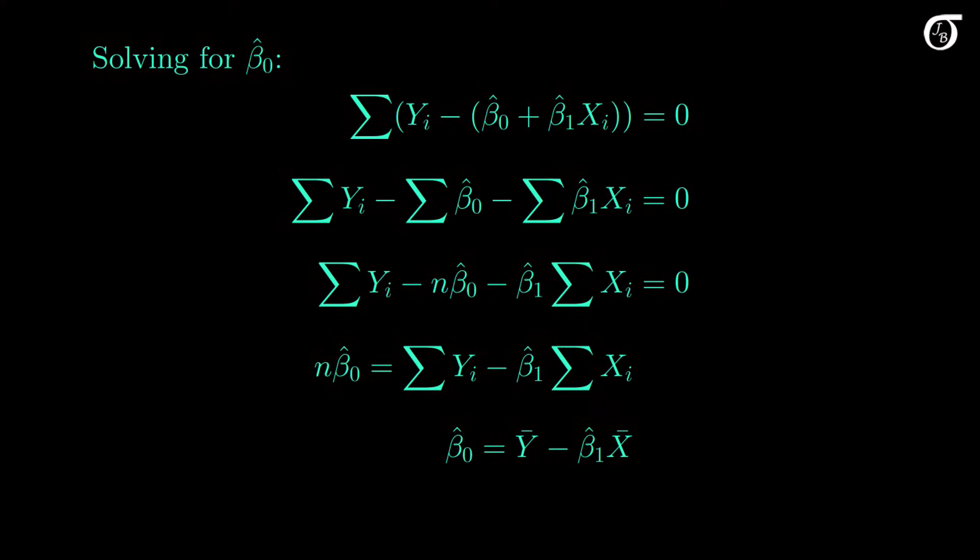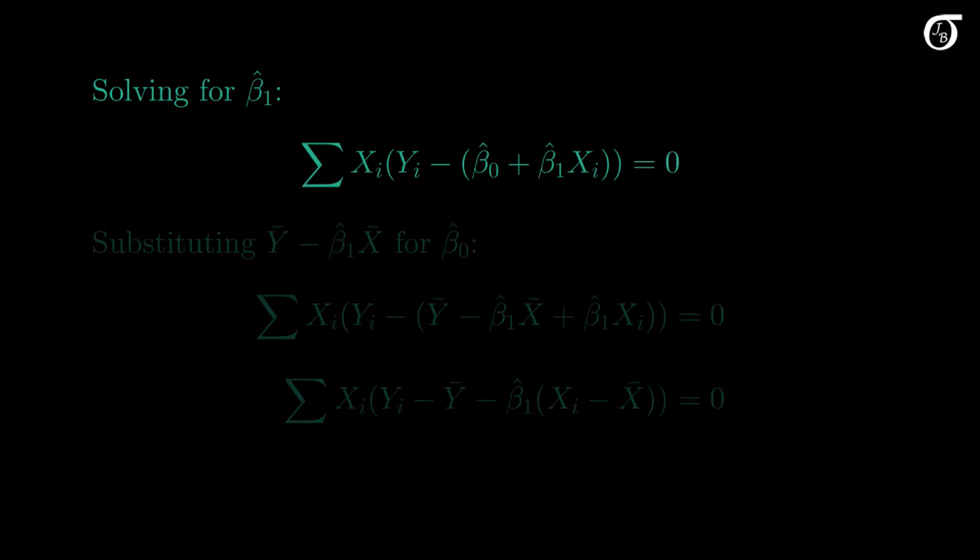That doesn't do us much good without knowing what beta1 hat is. Let's see if we can piece that side of things together. Here's the partial derivative with respect to beta1 hat set to 0. And the trick here is to note that we've already solved for beta0 hat, and got an expression in terms of beta1 hat, so we can substitute that in for beta0 hat.